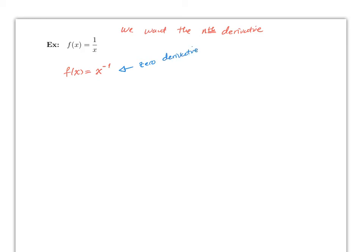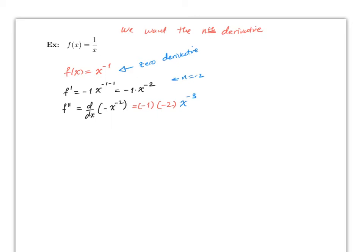We already did the first derivative: f prime equals minus 1 times x to the negative 2. Whenever you want to find a pattern, the best advice is not to simplify things, otherwise you will not see the pattern. The second derivative is the derivative with respect to x of the first derivative. This will be minus 1 times minus 2 times x to the negative 3. The third derivative: minus 1 times minus 2 times minus 3, and x to the negative 4. The fourth derivative: minus 1 times minus 2 times minus 3 times minus 4, and x to the negative 5.